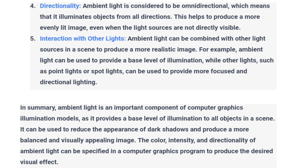In summary, ambient light is an important component of computer graphics illumination models as it provides a base level of illumination to all objects in a scene. It can be used to reduce the appearance of dark shadows and produce a more balanced and visually appealing image. The color, intensity, and directionality of ambient light can be specified in a computer graphics program to produce the desired visual effect.